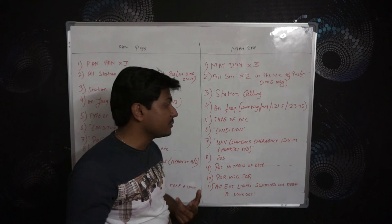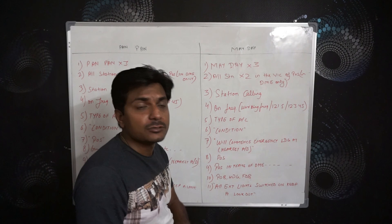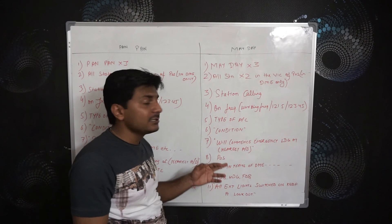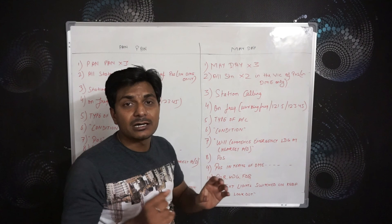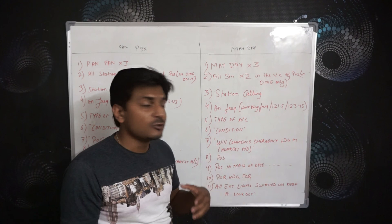The condition will be whatever condition you are facing — for example, engine number failure, which I have taken in the last distress message example. You can put whatever condition you are facing. The intention in Mayday or distress situations is to come in for an emergency landing at the nearest aerodrome. So whatever the nearest aerodrome is as per your current position, you have to land there.